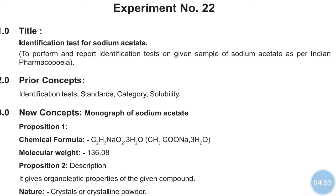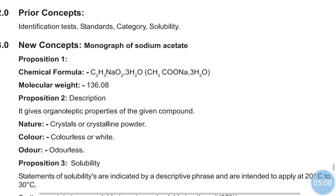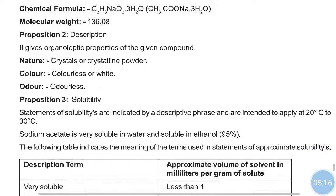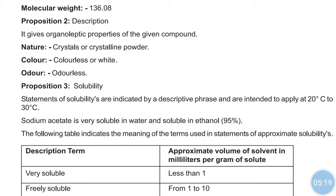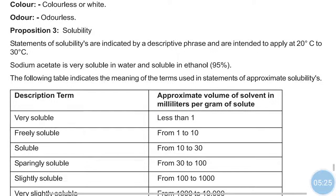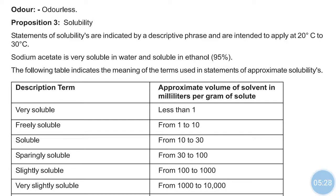Sodium acetate — you had also seen this compound in the theory part. Its formula is CH3COONa·3H2O, with a molecular weight of 136.08. Its organoleptic properties: it is crystalline, colorless or white, and odorless. Regarding solubility, sodium acetate is very soluble in water and also soluble in ethanol.